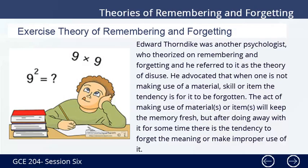The Exercise Theory of Remembering and Forgetting. Edward Thorndike was another psychologist who theorized on remembering and forgetting, and he referred to it as the theory of disuse. He advocated that when one is not making use of a material, skill, or item, the tendency is for it to be forgotten. Making use of materials or items will keep the memory fresh, but after disuse for some time, there is a tendency to forget the meaning or make improper use of it.